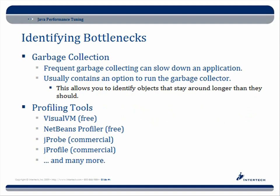As mentioned, the garbage collection profiling view shows garbage collection activity. Frequent garbage collection can slow down an application because of the stop-the-world algorithm it uses. The profiler usually contains an option to run the garbage collector manually — you can click a button to run it now, then look and see which objects are still kept around. Is there anything that should have been garbage collected but wasn't? At that point, you can start to look for collections or other structures hanging on to an object longer than necessary.